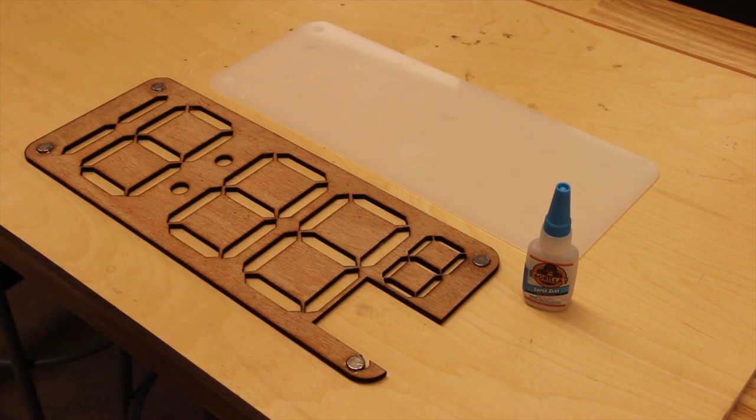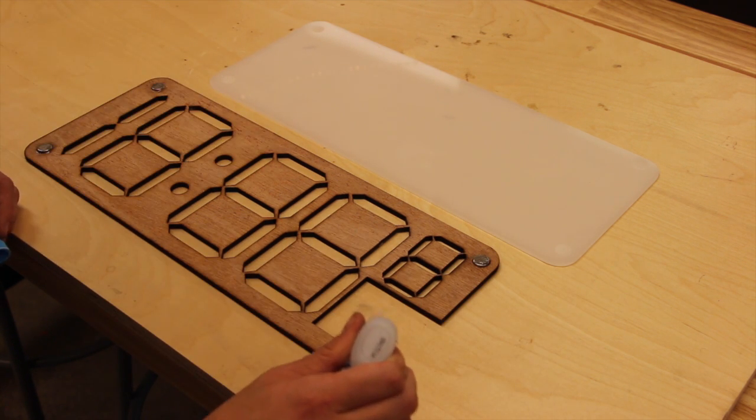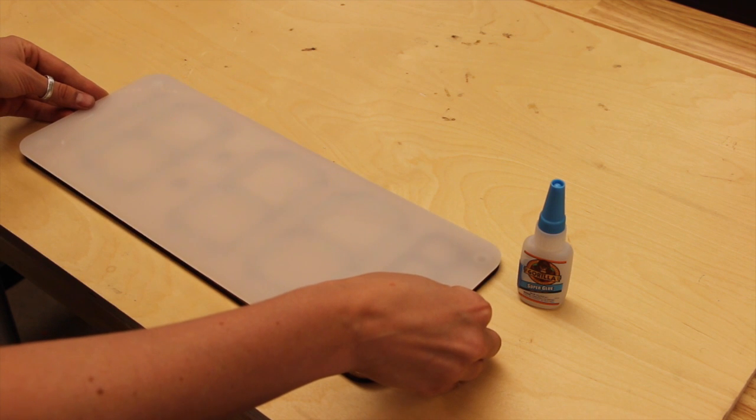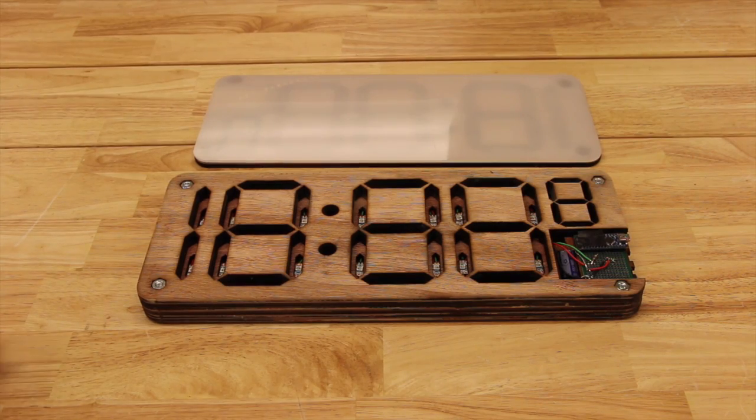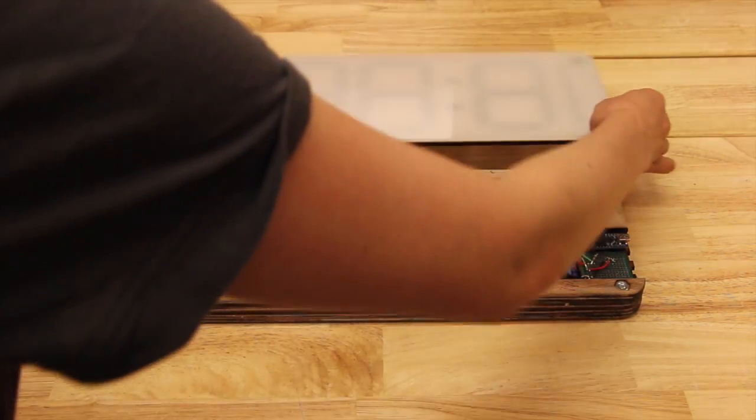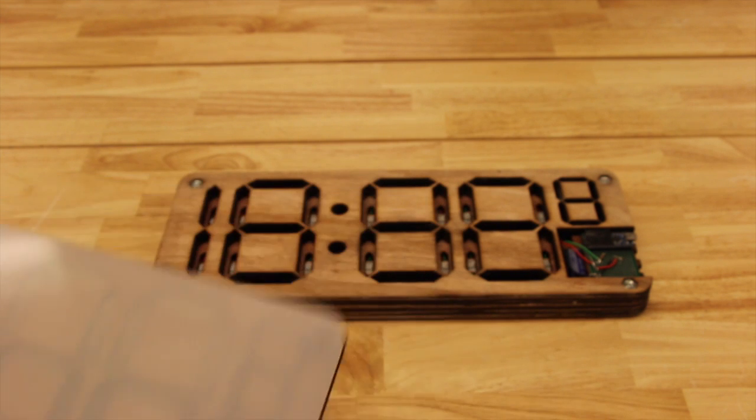Next, I put superglue on the magnets and fit the acrylic layer on top. The acrylic layer should have etched circles on the bottom to help align the layer perfectly on top of the magnets. When the glue is dry, the top wood layer and the acrylic can slide on and off of the clock, exposing the Arduino and circuitry if needed.